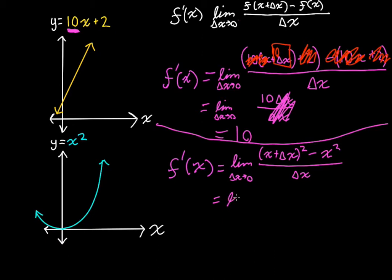All right. That's the same as the limit as delta x goes to 0. I'm going to simplify this out. This is going to be x squared plus 2 delta x plus delta x squared minus x squared over delta x.